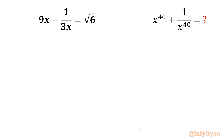Welcome back to InfiGarn friends. Today in this video we are going to take up another exciting challenge from Math Olympiad. We have to evaluate x power 40 plus 1 over x power 40, and the given equation is 9x plus 1 over 3x equal to square root 6. So let's get started by writing our equation once.